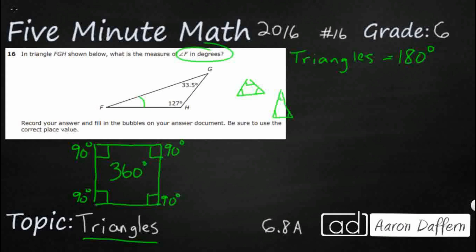So every single square, rectangle, rhombus, trapezoid, doesn't matter, equals 360 degrees total on the inside.